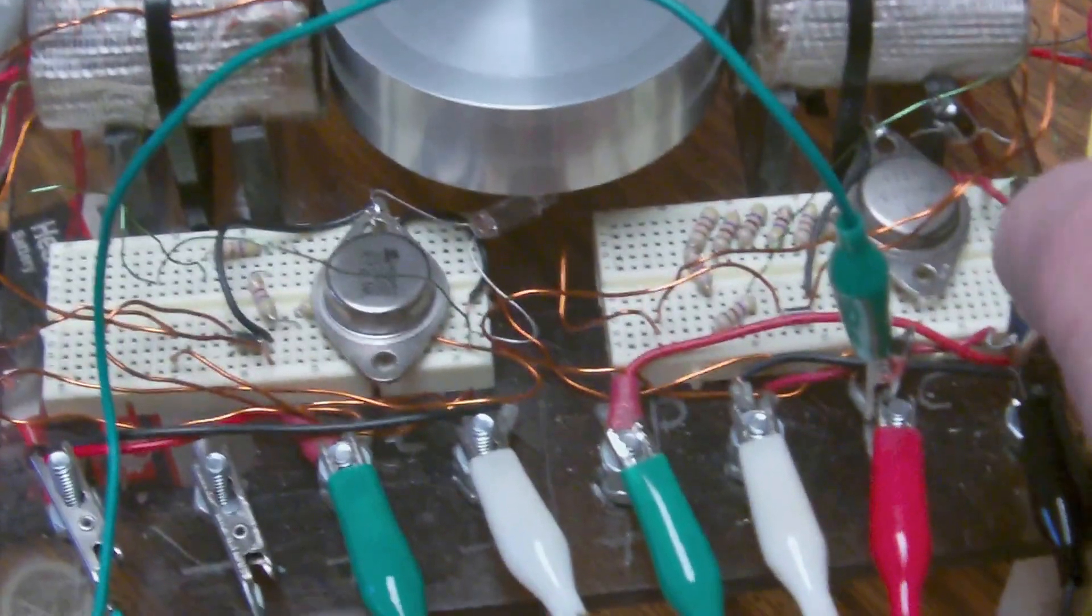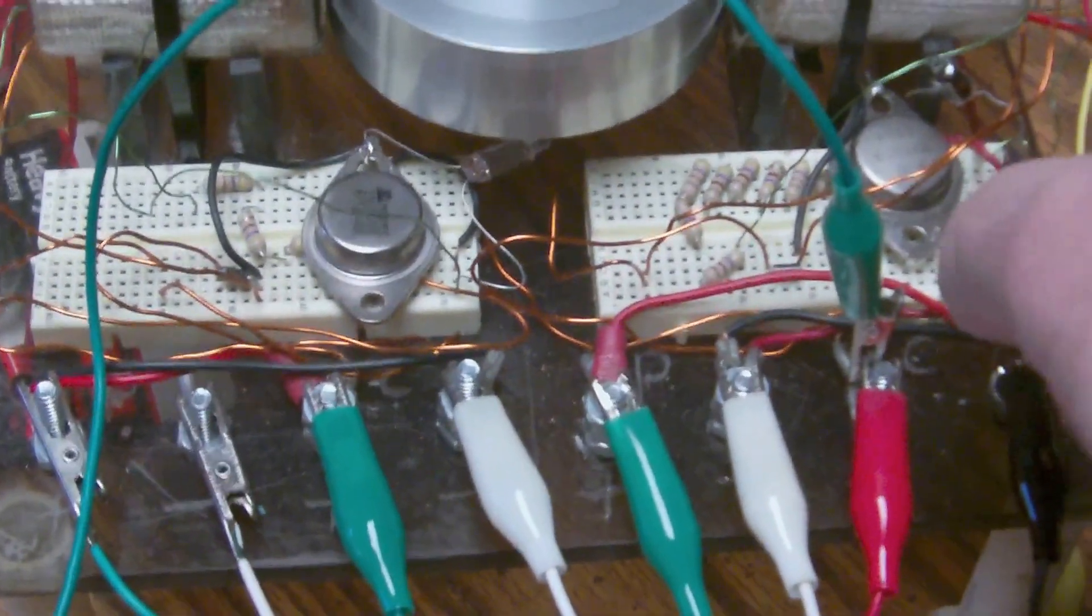But look what happens when I take it off. I'm gonna take this one off, but I want you to look here. This is the primary voltage coming from the primary battery, or the current that's running the Bedini.